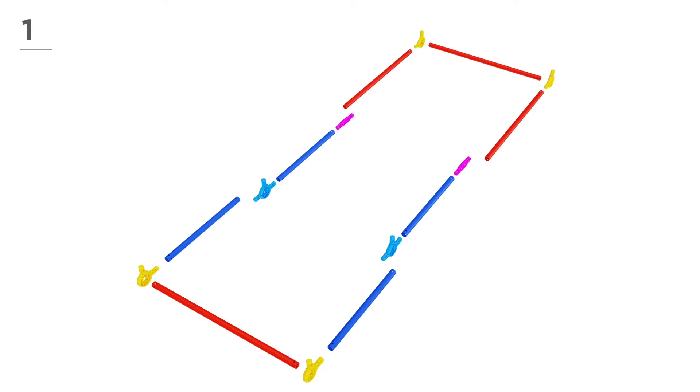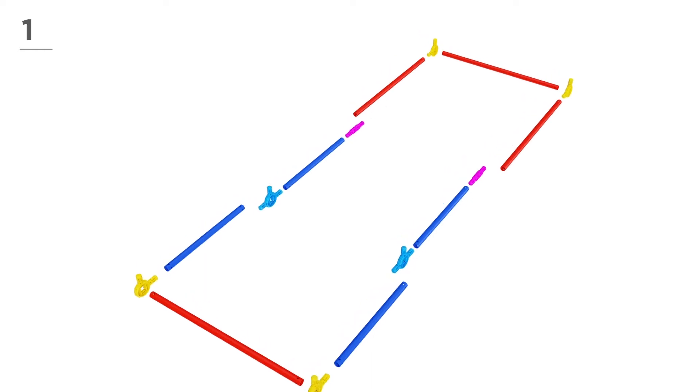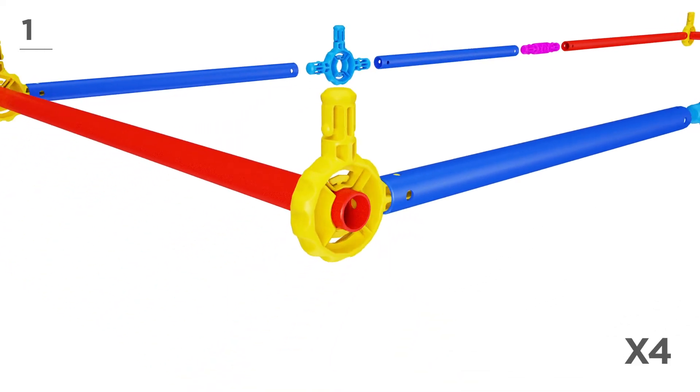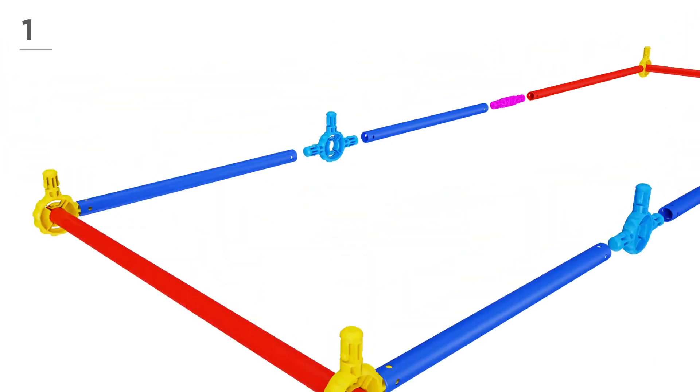Ready? Let's get started! First, build the bottom using 4 red poles, 4 navy poles, 4 yellow connectors, 2 blue connectors, and 2 pink connectors. Snap-and-click all parts together, like this.